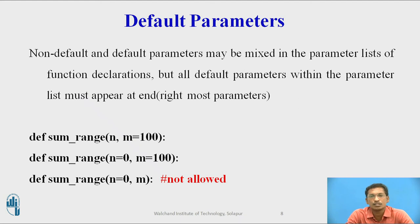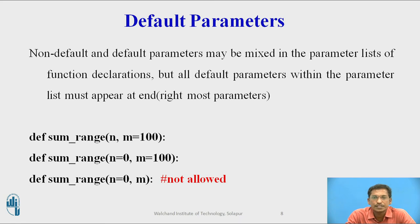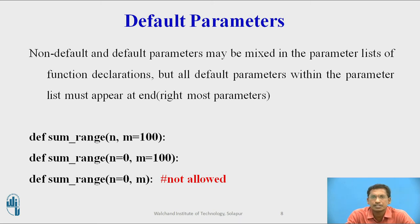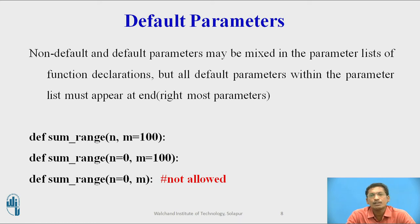There is another concept in Python functions called default parameters. Non-default and default parameters may be mixed in the parameter list of the function declaration, but all default parameters must appear at the end. A default argument is when the value is fixed during the declaration of the function. There is one rule: if mixing default with non-default parameters, the default parameter must be on the right-hand side. Example: def some_range(n, m=100) — m equals 100 is the default argument.